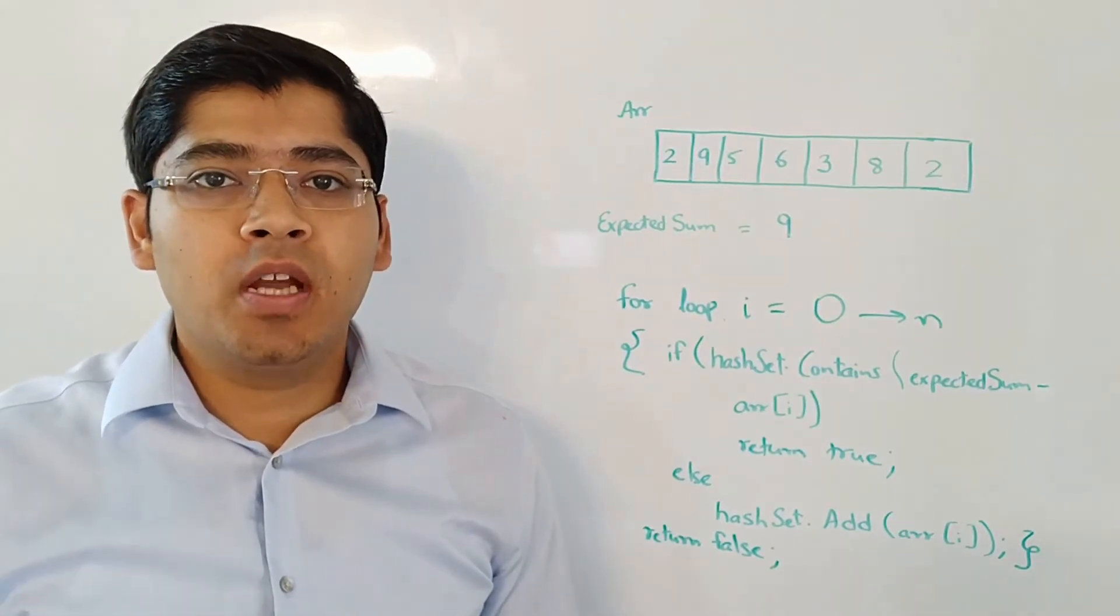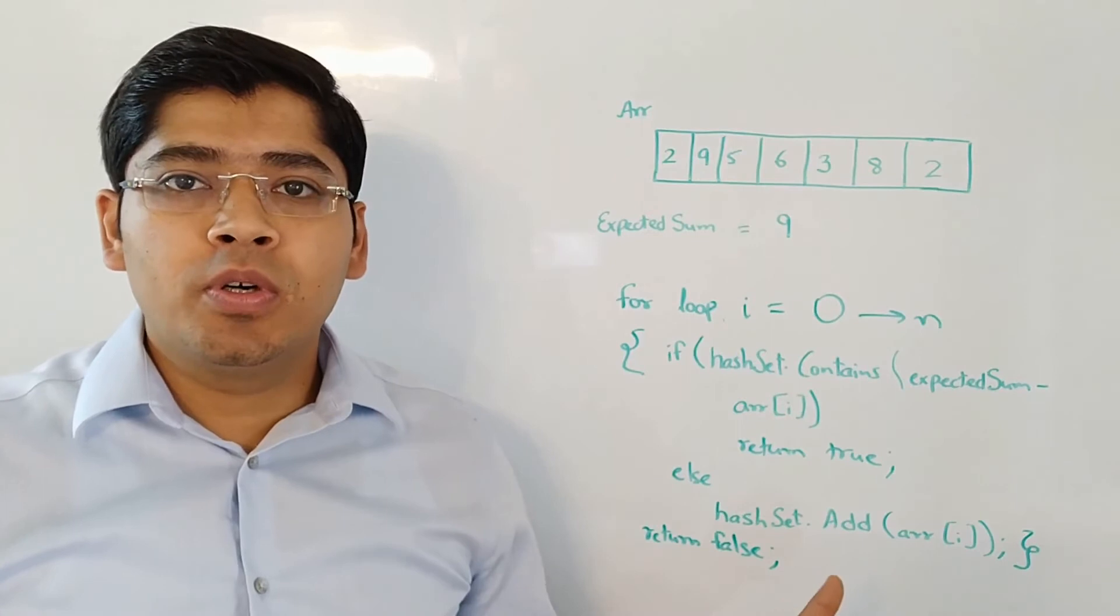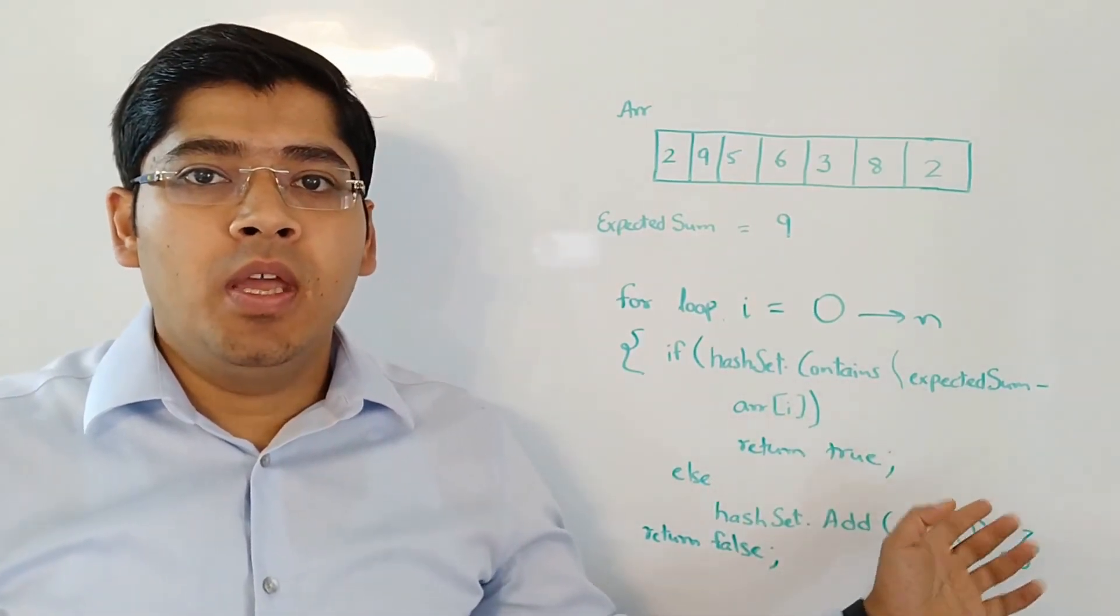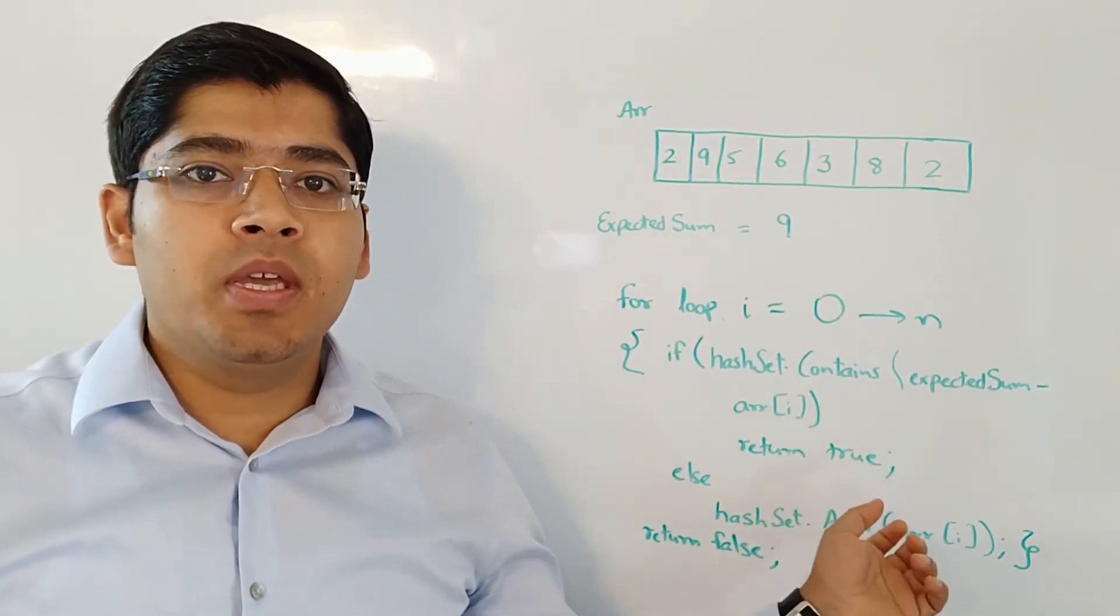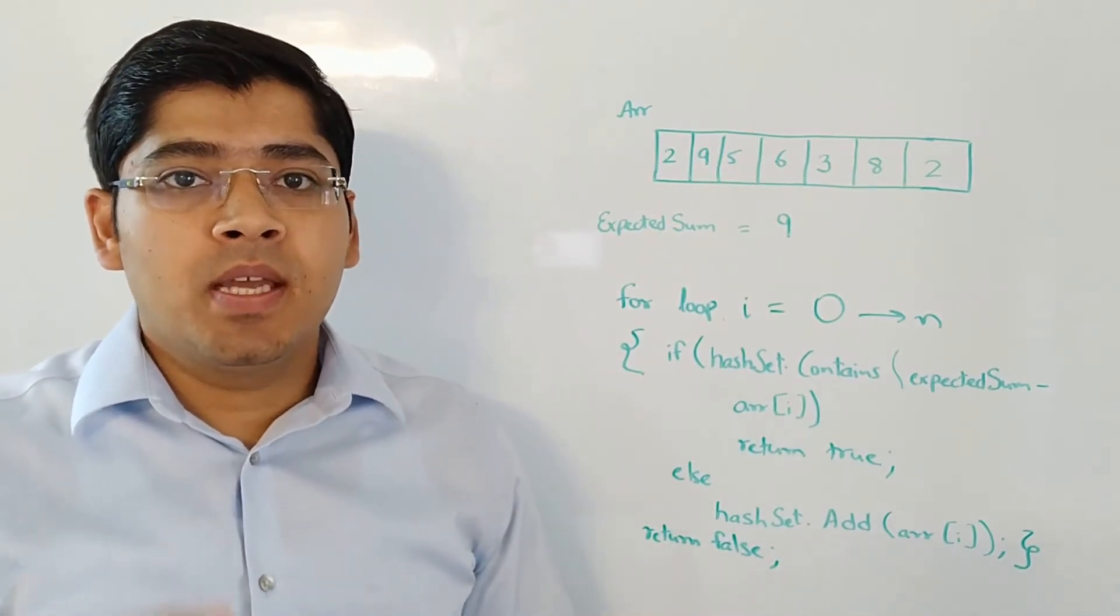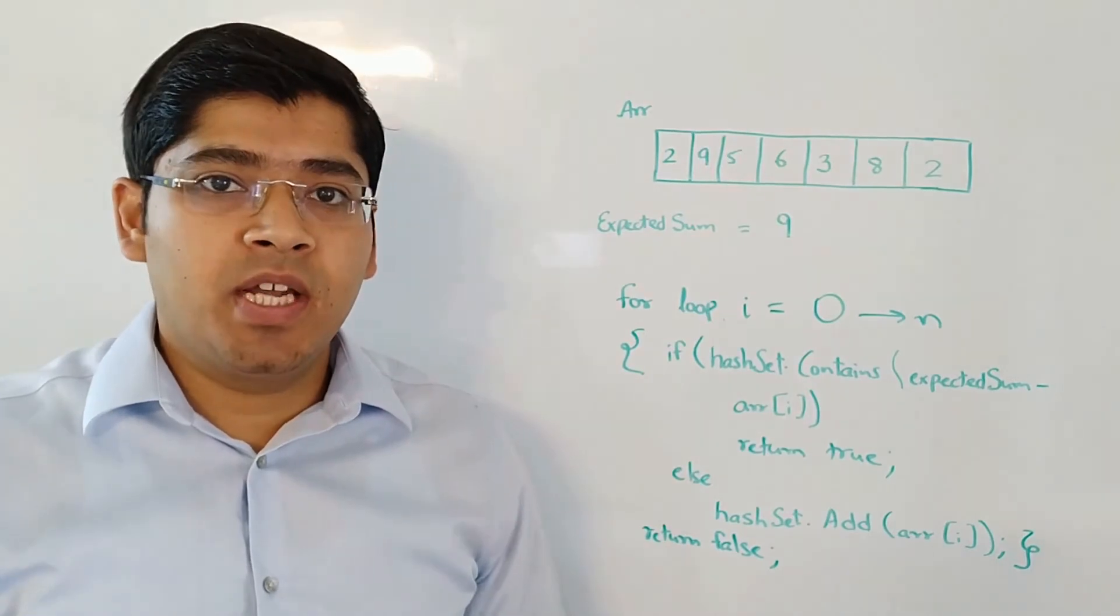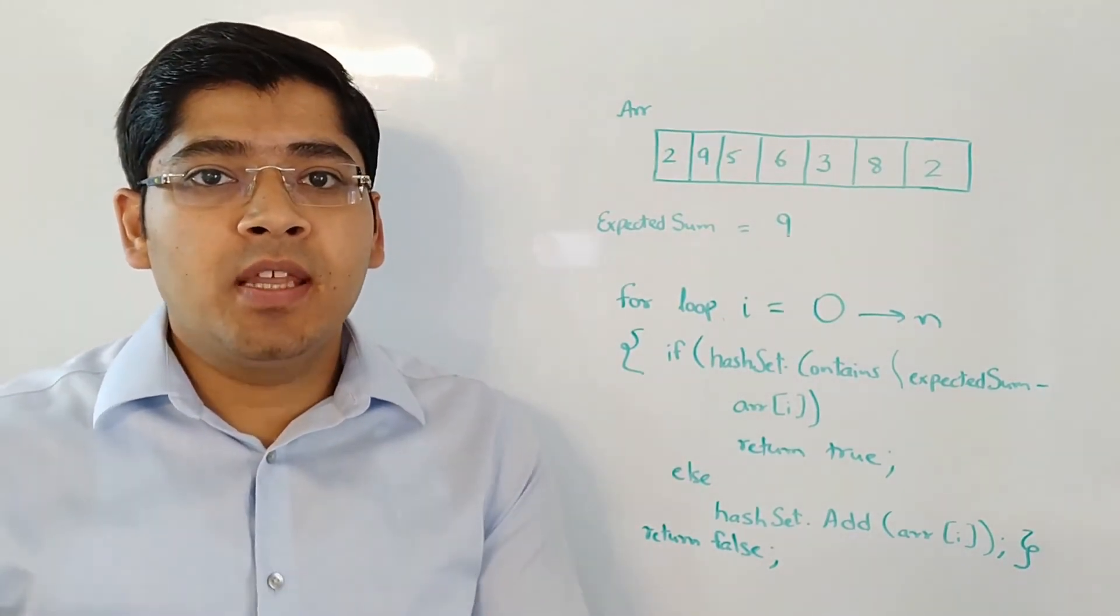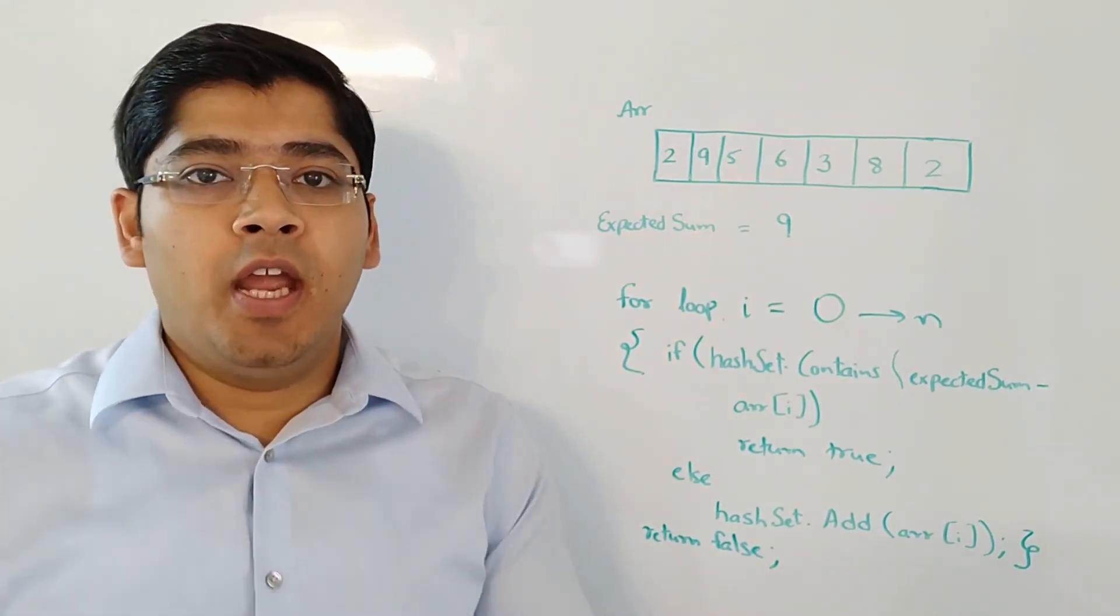The next solution that comes to mind is using a hash set. I have written the pseudo code right here. What we are doing is we are looping through the array and at each and every point, what we are doing is we are checking if the expected sum minus the array element exists in the hash set or not. If it does not exist, we add the array's element to the hash set.